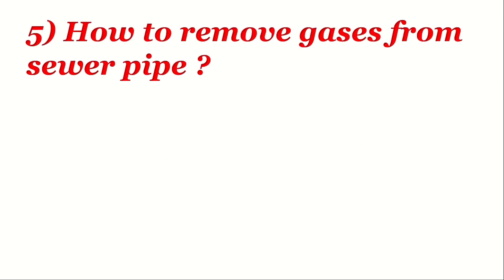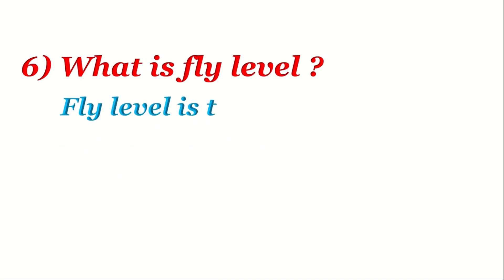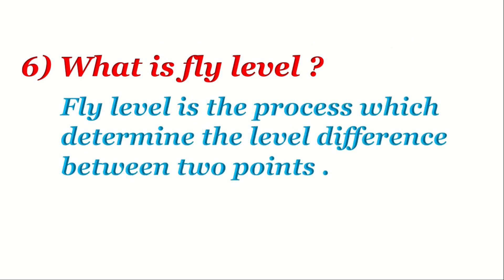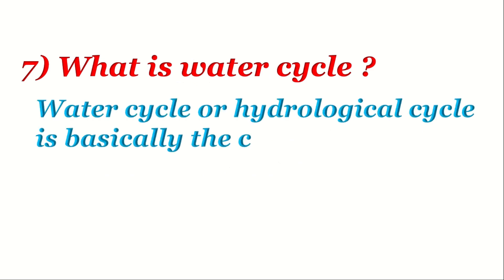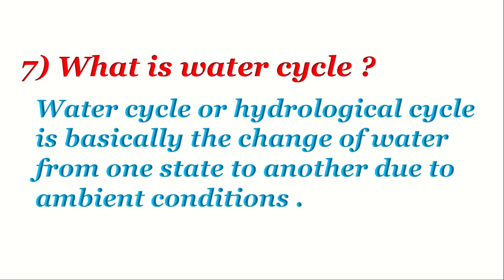Question 5: How to remove gases from sewer pipes? Different types of gases are removed by providing manholes and vent pipes. Question 6: What is fly level? Fly level is the process which determines the level difference between two points. Question 7: What is the water cycle? The water cycle, or hydrological cycle, is basically the change of water from one state to another due to ambient conditions.